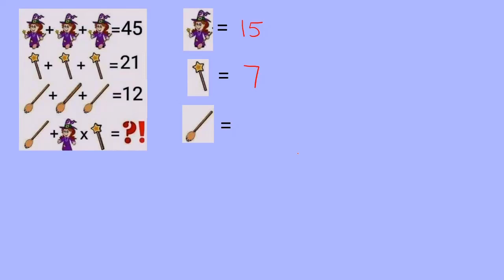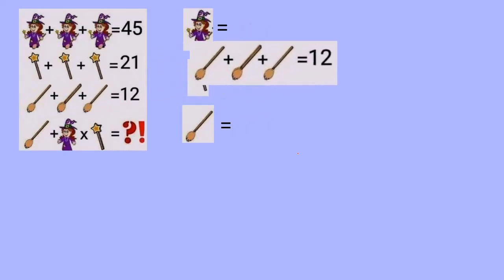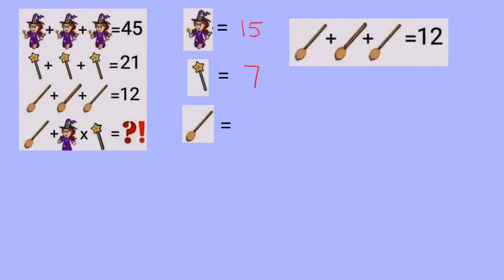Third equation is going to be able to get us the value for a broom. Now remember, this is actually two brooms here. So we don't have three brooms, we actually have four brooms equals 12. Divide by four, and we get that one broom is going to equal three.